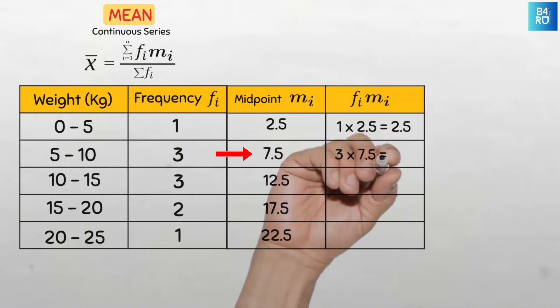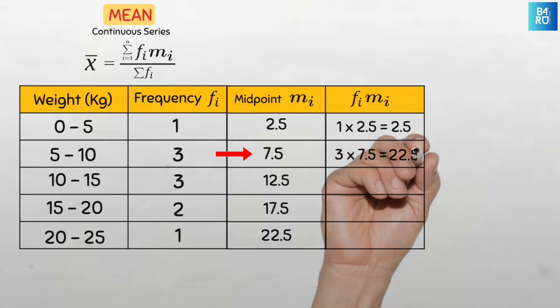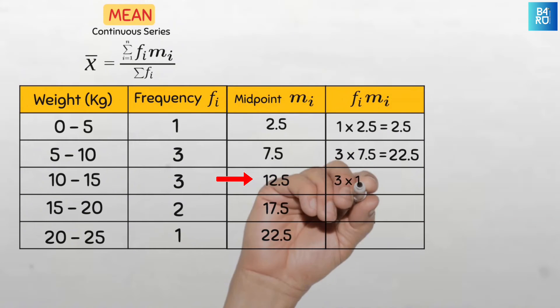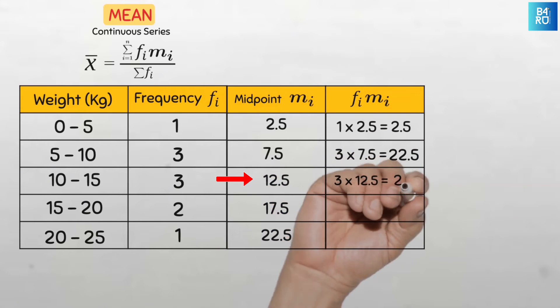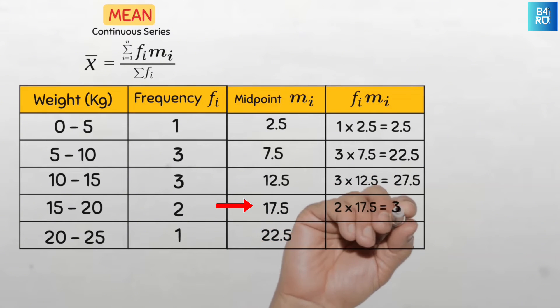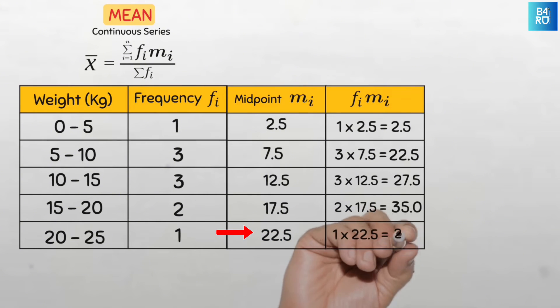For the second class, 3 times 7.5 and that's 22.5. Here 3 times 12.5, that's 27.5. 2 times 17.5 and that's 35. And lastly 1 times 22.5 and that's 22.5.